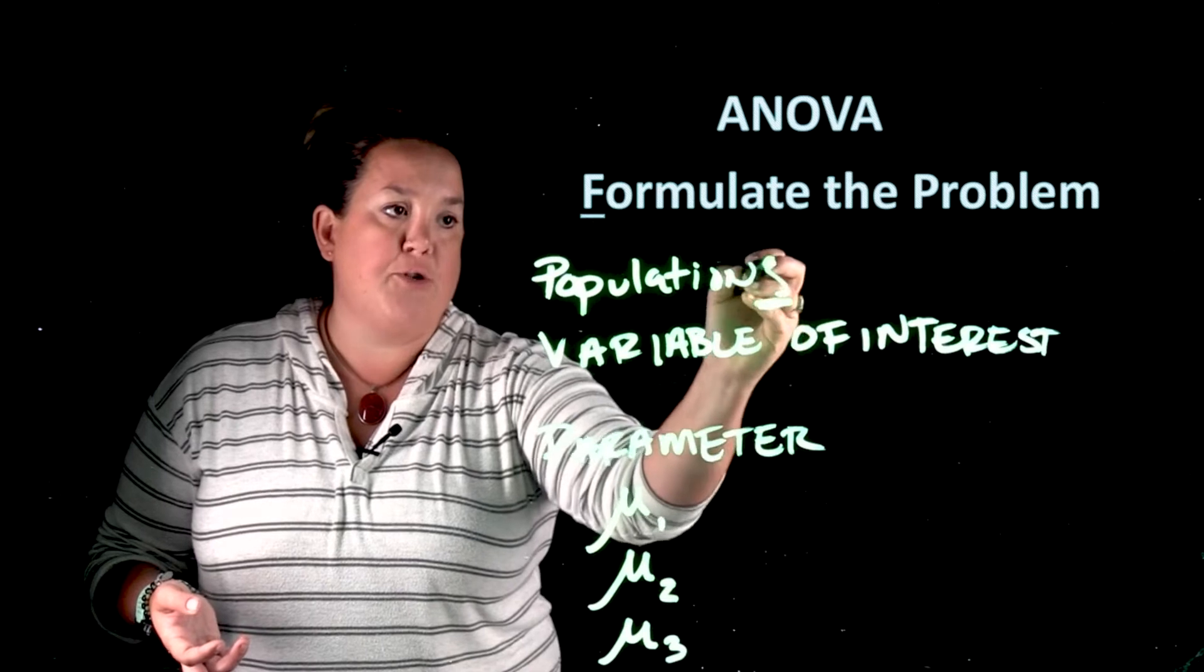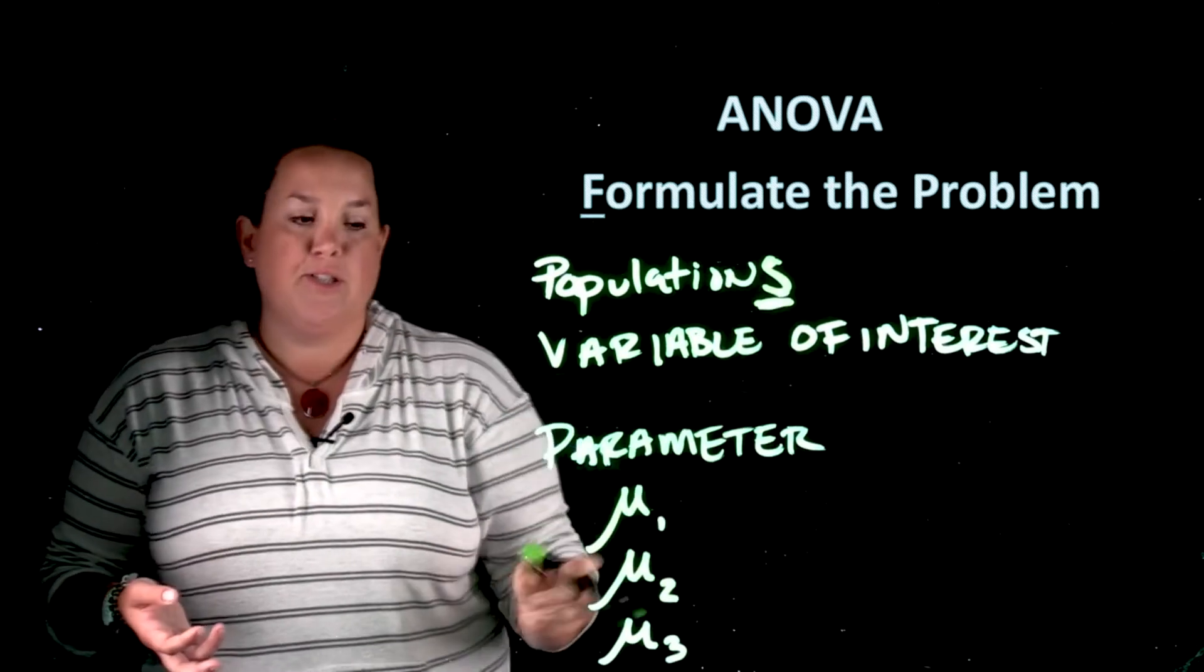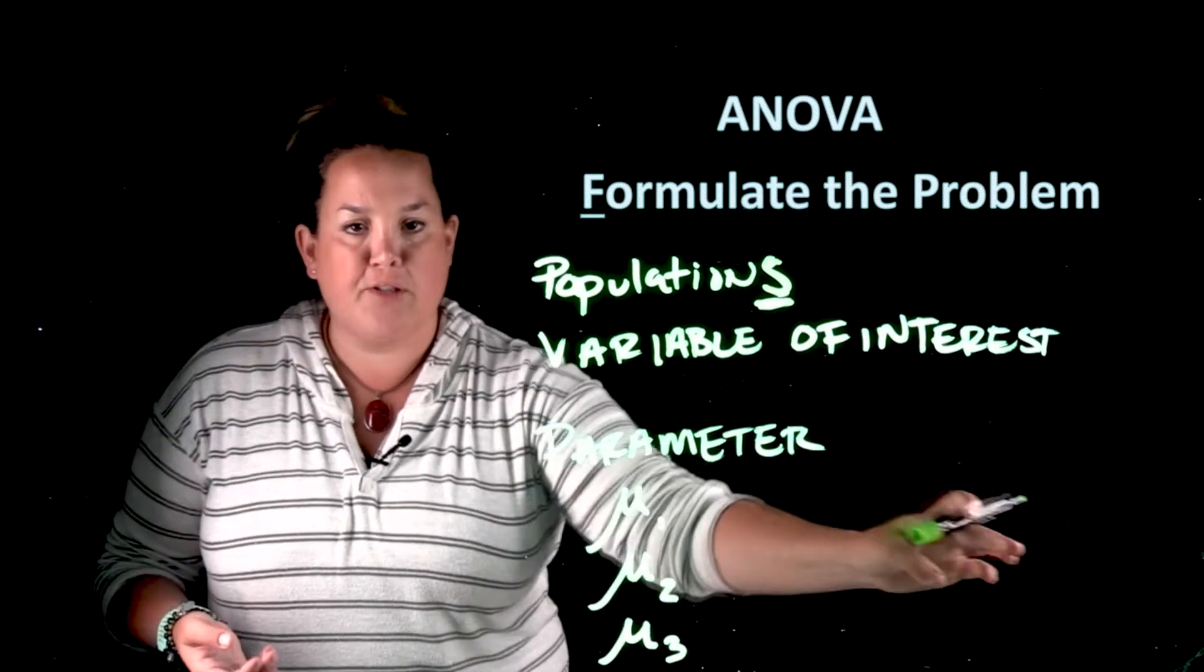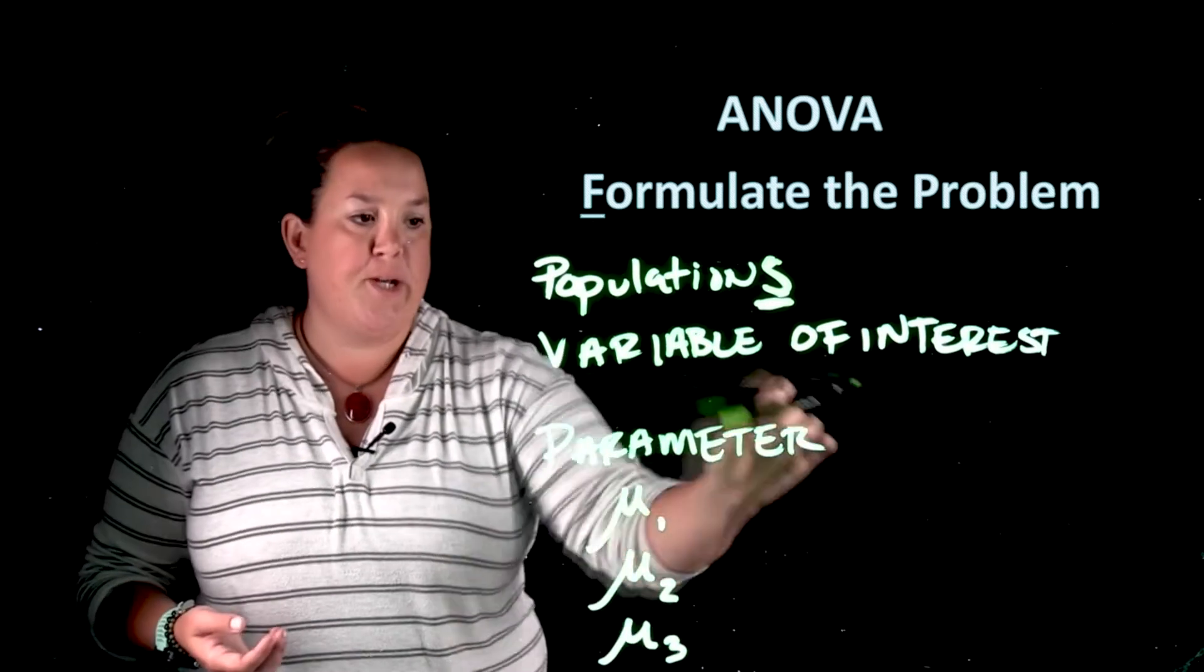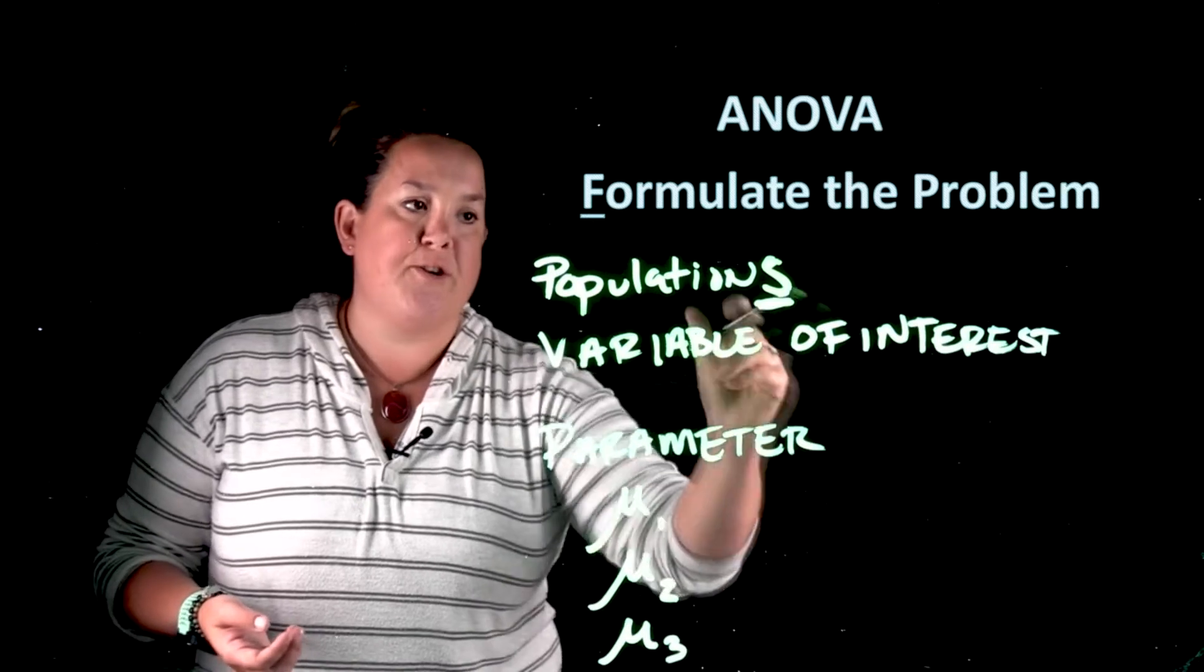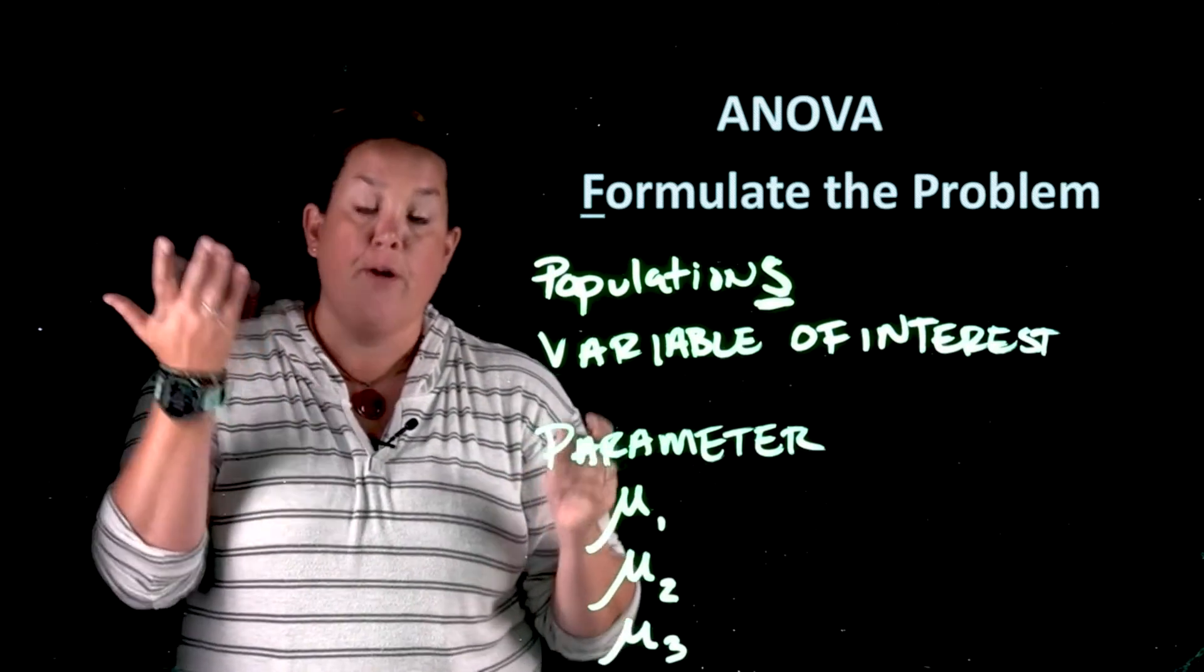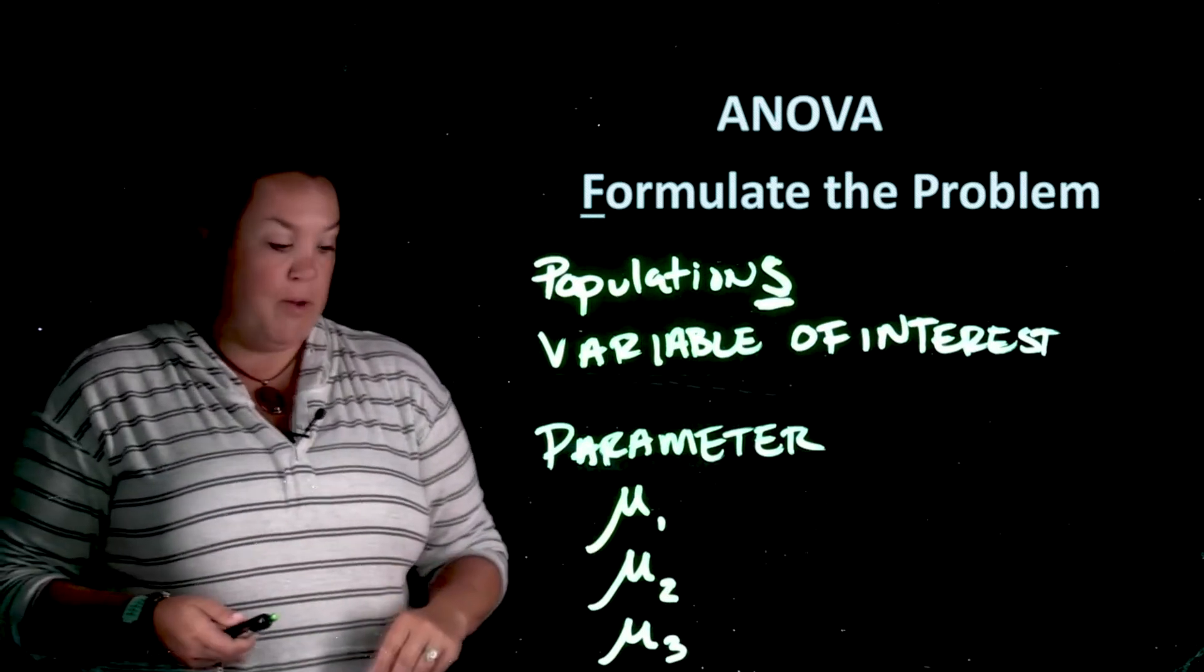But this time we're doing it for multiple populations. So you might have mean hours of study for freshmen, mean hours of study for sophomores, mean hours of study for juniors, mean hours of study for seniors. And that would be your four populations: freshmen, sophomore, junior, seniors. So that's that formulating.